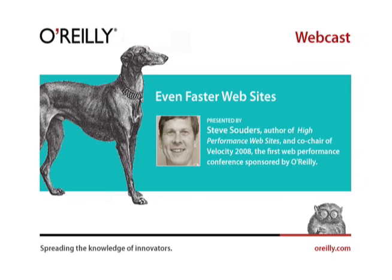Steve is also an engaging presenter, as you're about to find out. Thousands have benefited from his book and his presentations. Tomorrow at the Web 2.0 Expo in San Francisco, Steve will make a presentation from 1:30 to 2:20 p.m. He's also co-chair of Velocity, a new O'Reilly conference dedicated to web performance and operations, on June 23rd to 24th, 2008, in Burlingame, California. The theme is Fast, Scalable, Resilient, Available. Now he's going to give you a taste of his performance approach. Stay tuned.